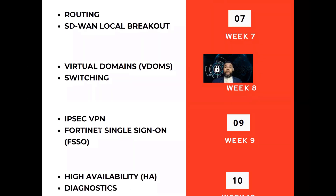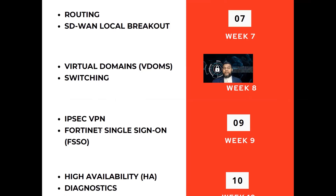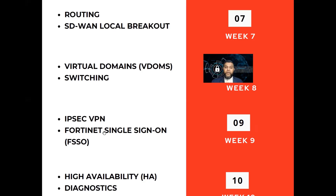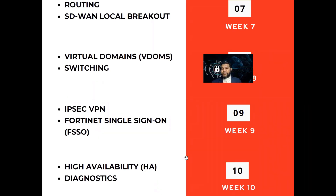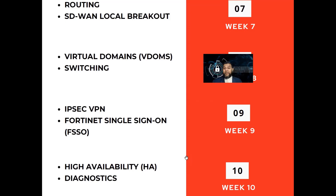We'll talk about site-to-site VPN, because if you are connecting branch offices — with a head office in one part of the country and branch offices across the country or across the globe — you need secure connectivity using site-to-site VPN with IPsec. This is normally implemented in most companies expanding across the country or globe. We'll also talk about single sign-on, how you can use the same username and password in Active Directory to authenticate with Fortinet and access applications using a single sign-on methodology for multiple services.